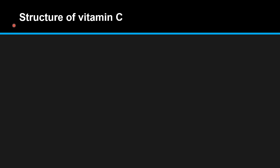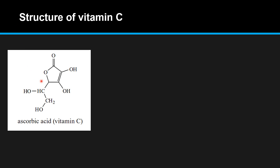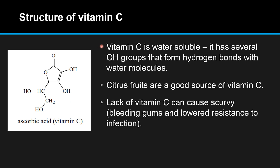Here is the structure of vitamin C. It has many OH groups, which are polar and able to form hydrogen bonds with water molecules, making vitamin C water soluble. It has several OH groups that form hydrogen bonds with water molecules. Citrus fruits are a good source of vitamin C.